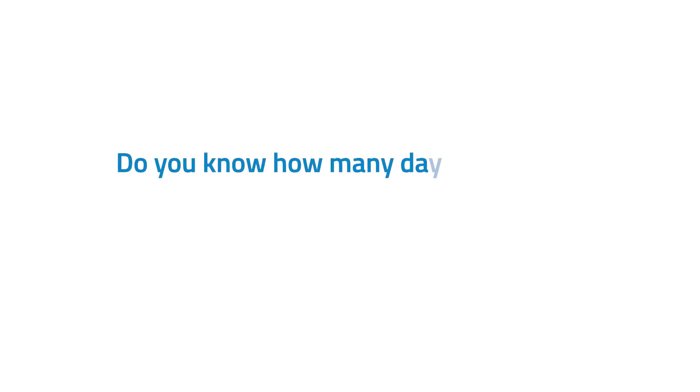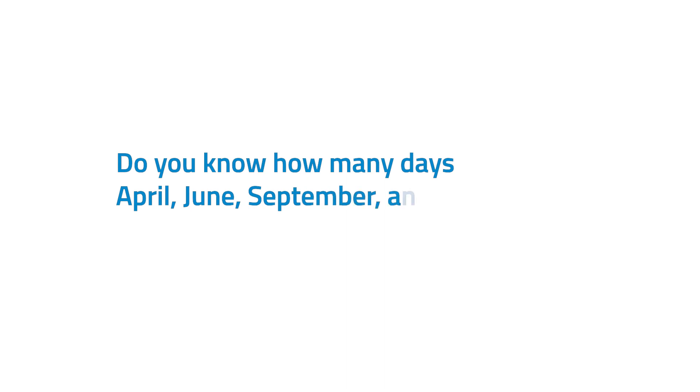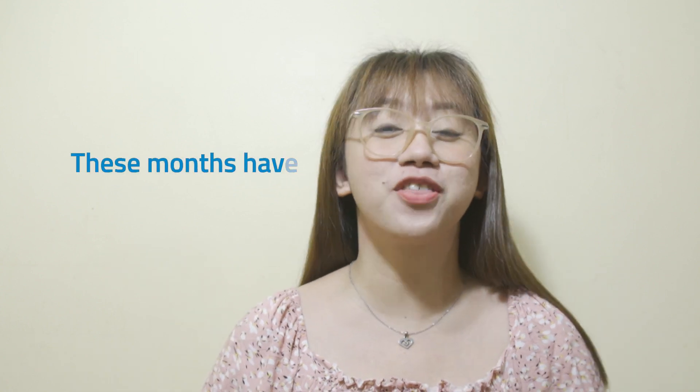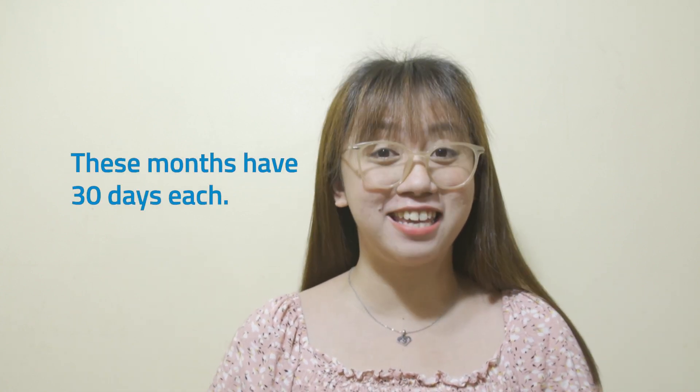Different months have different numbers of days. Do you know how many days April, June, September, and November each has? Fantastic! These months have 30 days each.